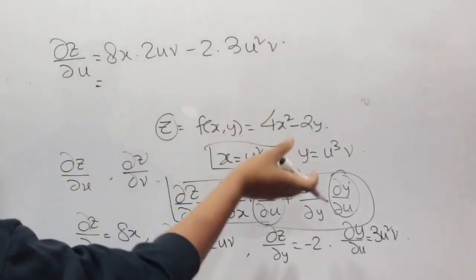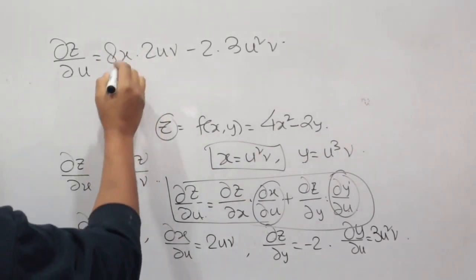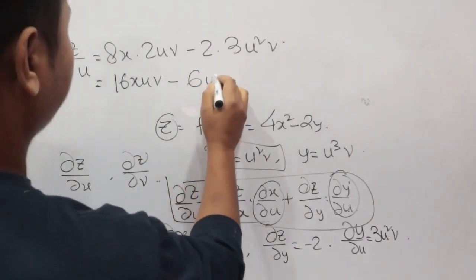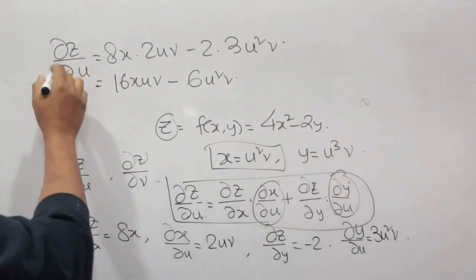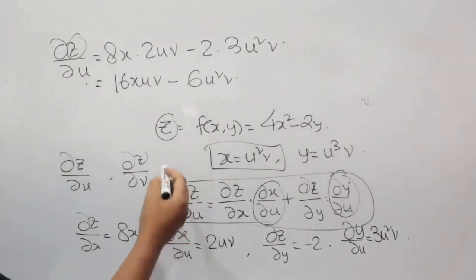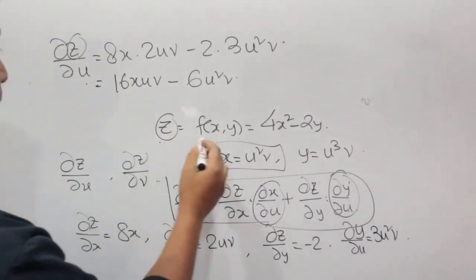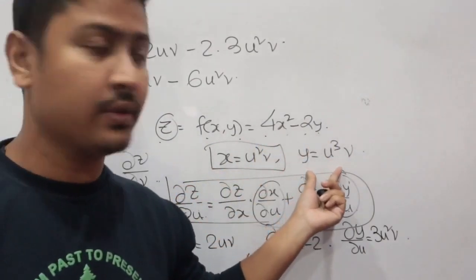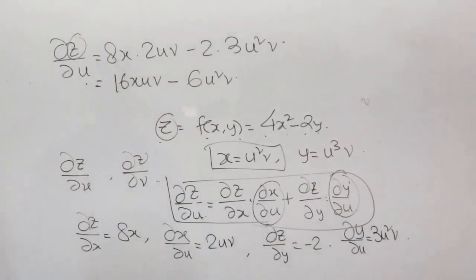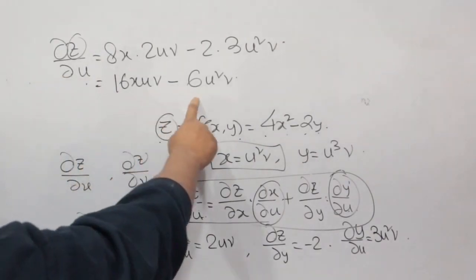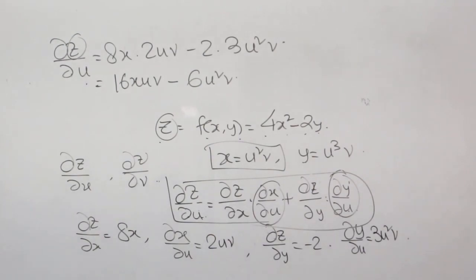After simplification, ∂z/∂u = 16xuv − 6u²v. So for the composite function z = 4x² − 2y with x = u²v and y = u³v, the partial derivative with respect to u using the chain rule gives us ∂z/∂u = 16xuv − 6u²v.